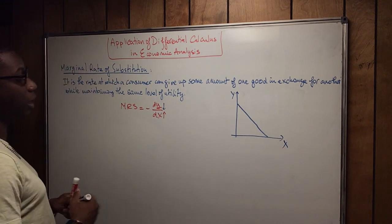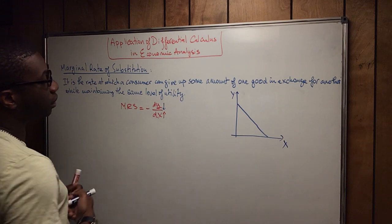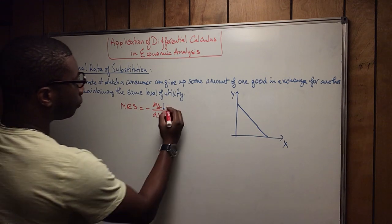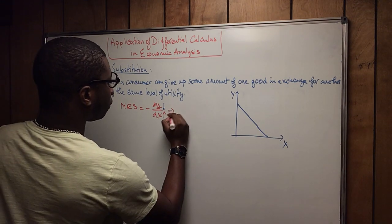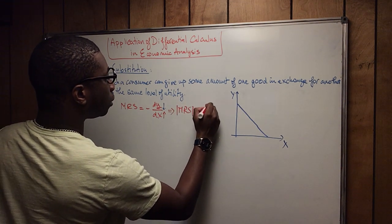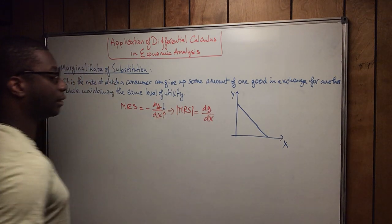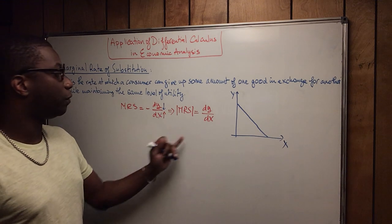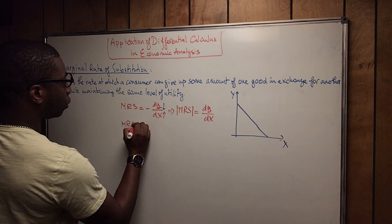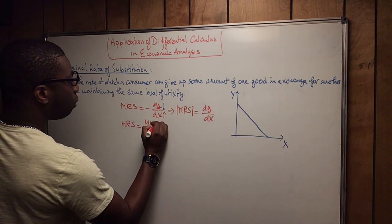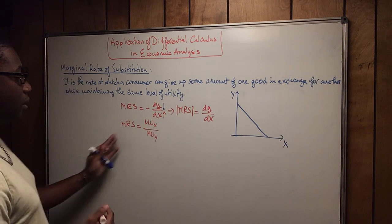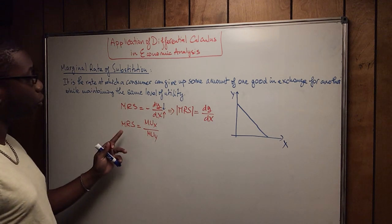Before I give you an example, note that MRS equals minus dy over dx, which in absolute value is dy over dx. When we talk about dy over dx, it means that the marginal rate of substitution equals the marginal utility of X over the marginal utility of Y. That is how you determine the marginal rate of substitution.